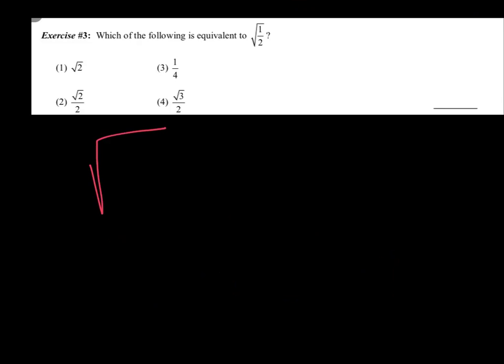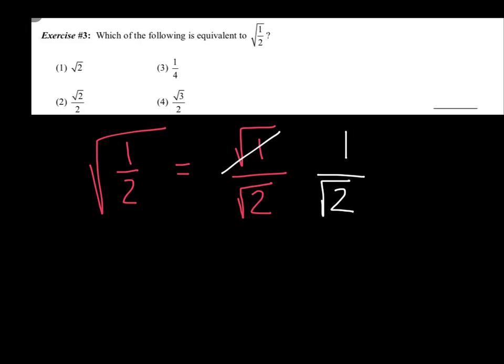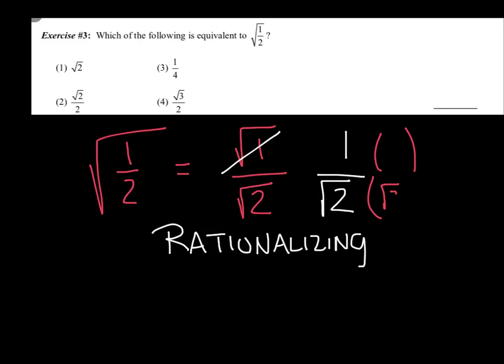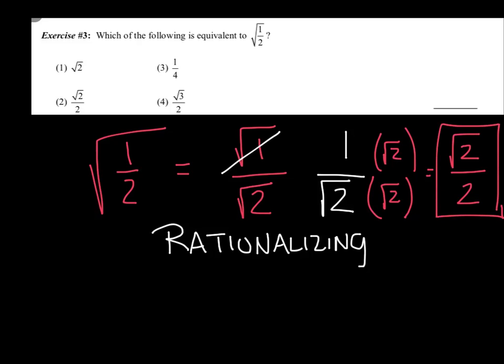Exercise 3: which of the following is equivalent to the square root of 1/2? Let's slow down and rewrite this. The square root of 1/2 is really the square root of 1 over the square root of 2, which is 1 over radical 2. We are rationalizing — we can't leave a radical in the denominator. So I'm going to multiply the top and bottom by radical 2. On top I get radical 2 over 2, and it's now simplified because there's no radical in the denominator.